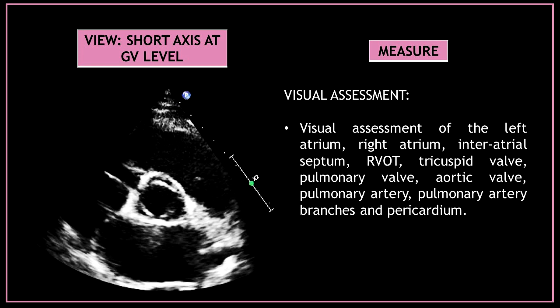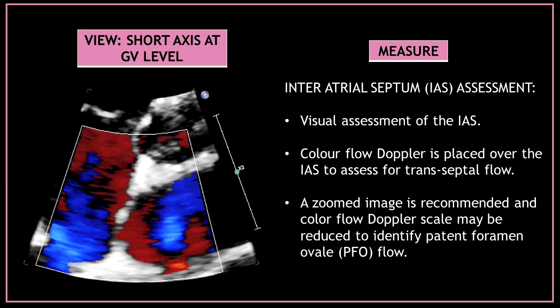After you do a global visual assessment, you can start to analyze each structure individually. You can start with the interatrial septum — do a visual assessment, then use color flow Doppler over the interatrial septum to assess for transseptal flow. A zoomed image is recommended and the color flow Doppler scale may be reduced to identify PFO flow.